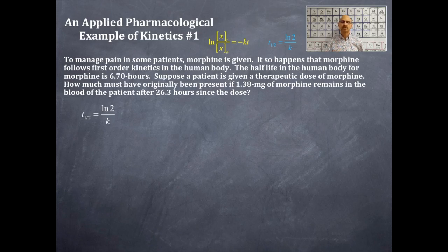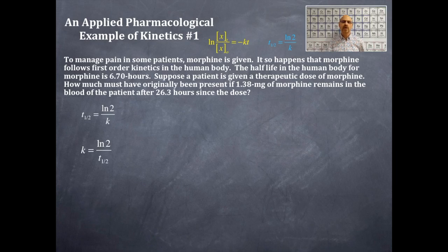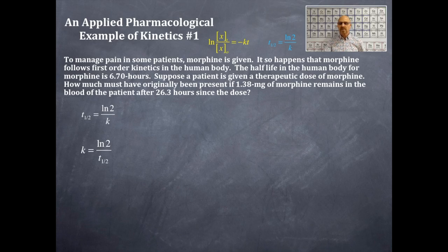The half-life equation is: t of 1/2 is equal to natural log of 2 over k. We were given the half-life in this problem, so we need to solve for k. We rearrange that equation: k is equal to natural log of 2 over t of 1/2, where t of 1/2 is the half-life. We're going to plug in 6.70 hours for t of 1/2 and solve for k.